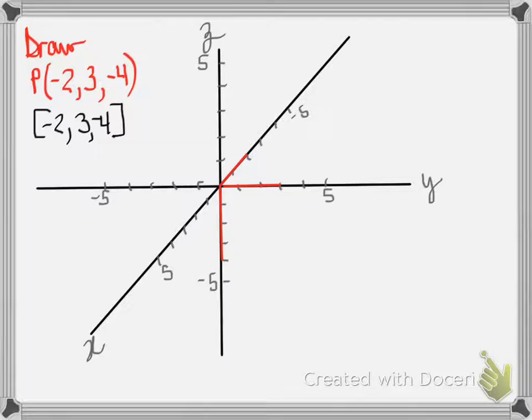Notice how I drew those red lines out. Negative 2 along the x is going back this way. Positive 3 along the y is moving right 3, and negative 4 going down 4. So those are the three main ones. And from this, we're going to draw our box.